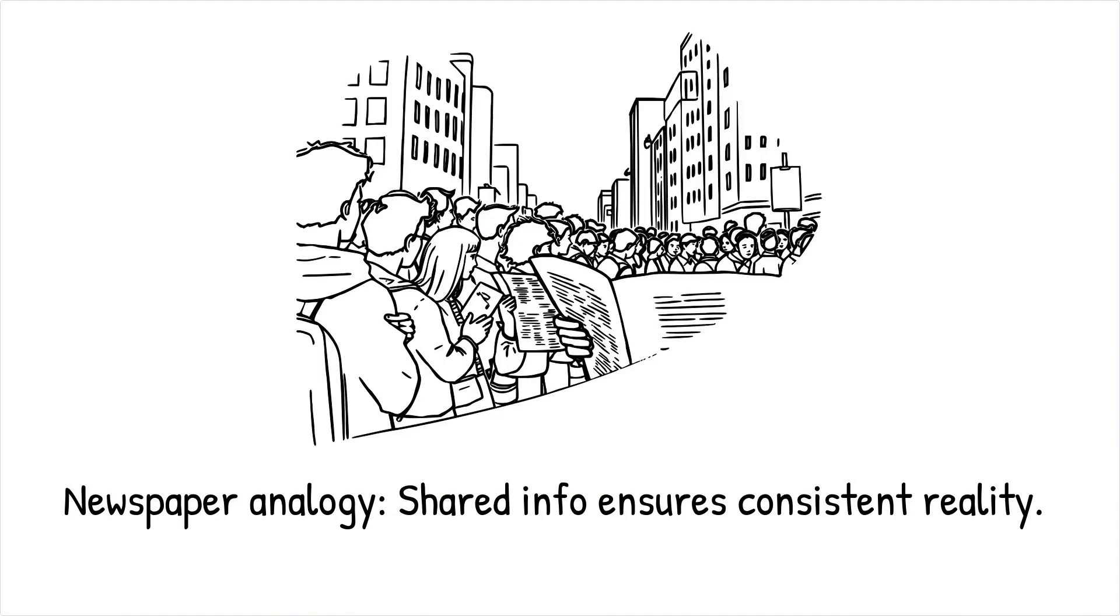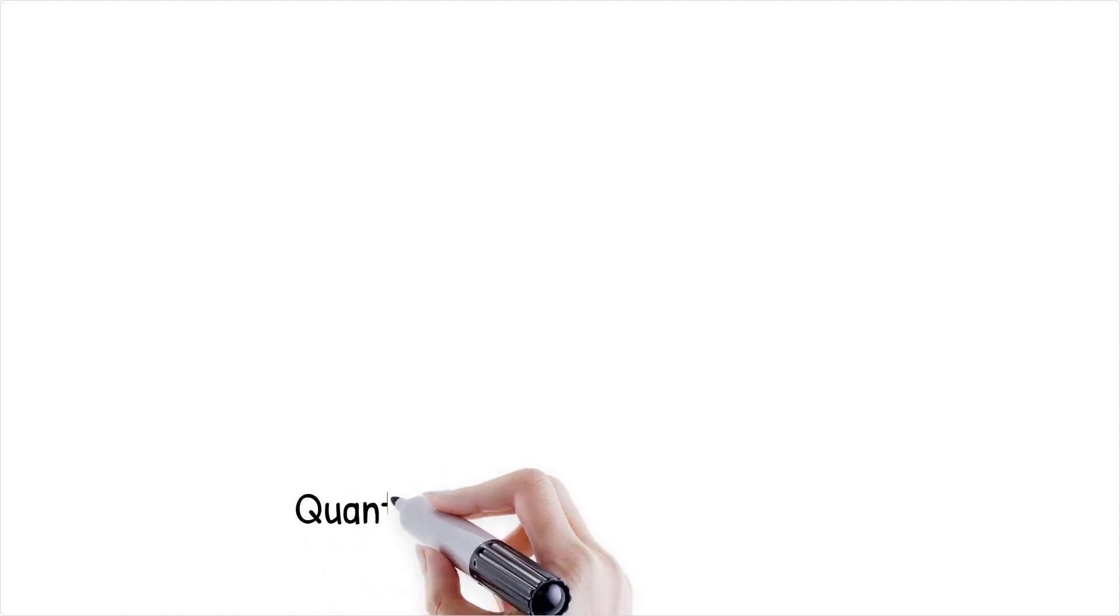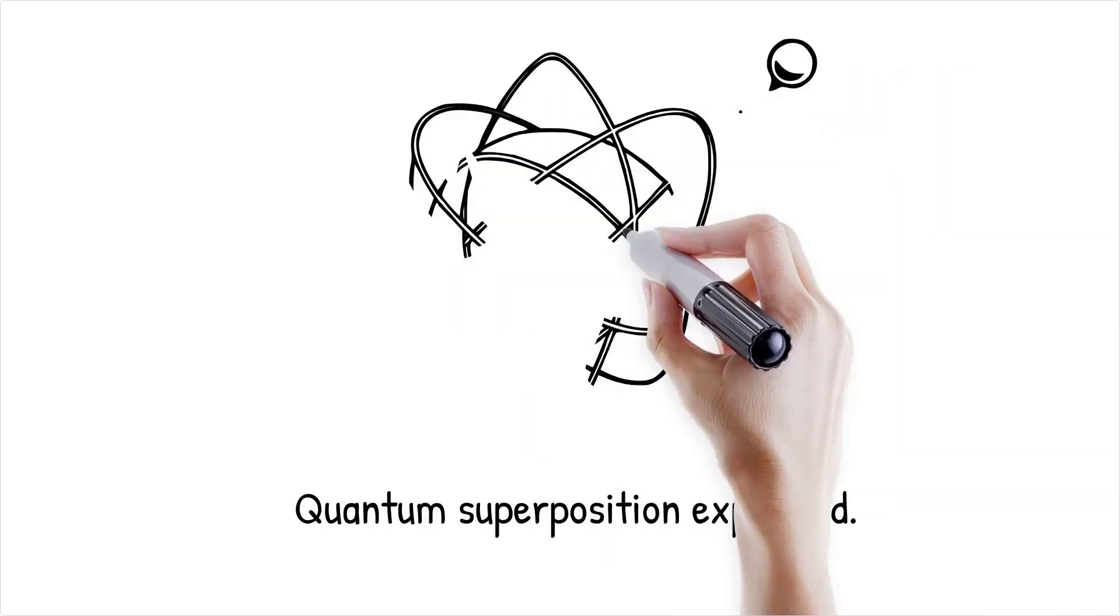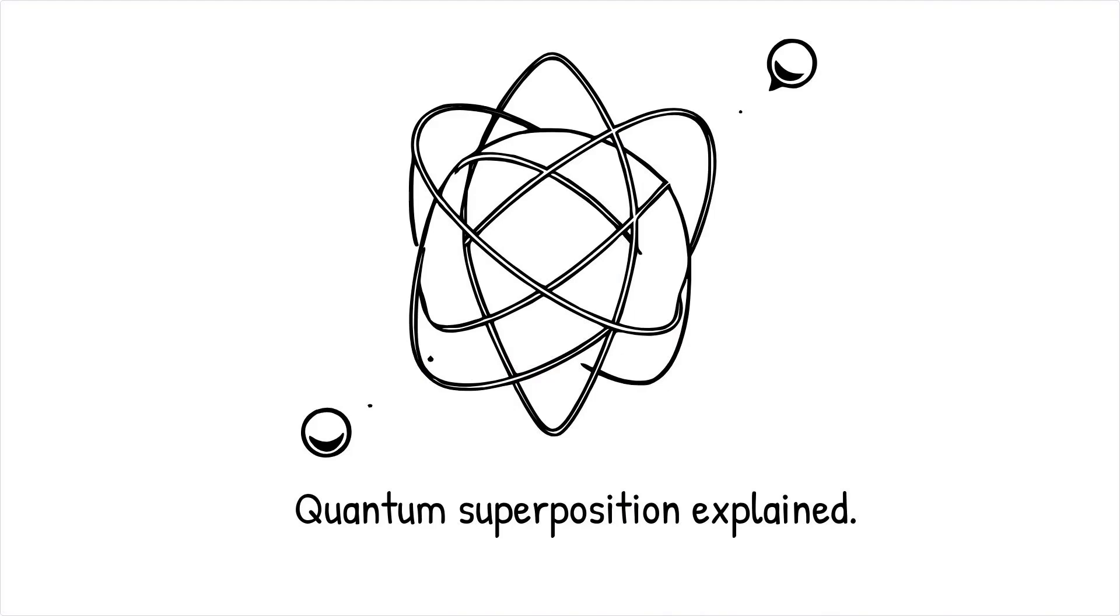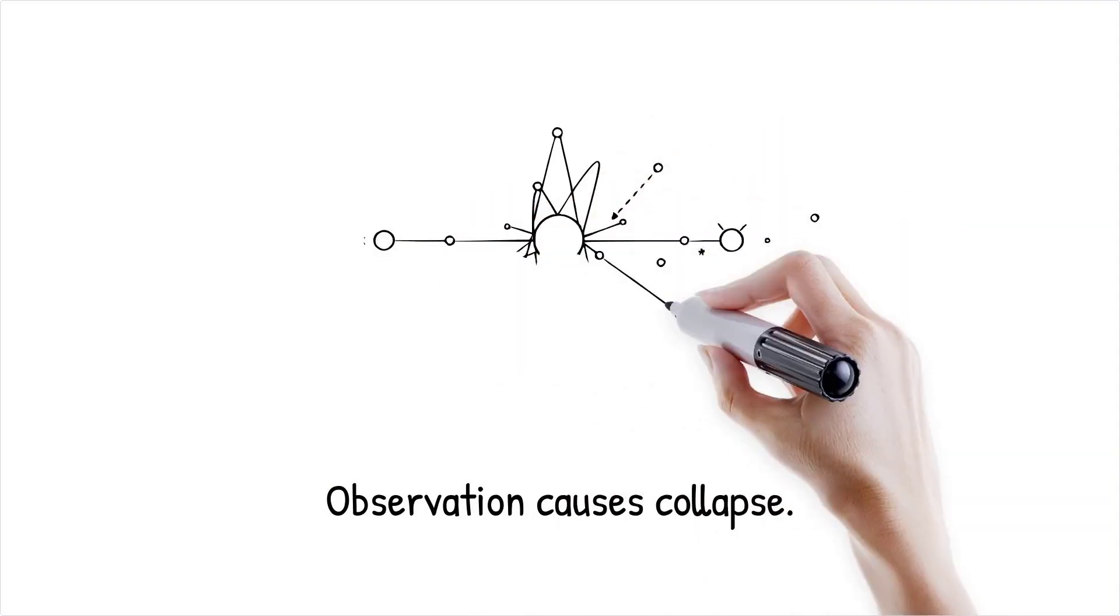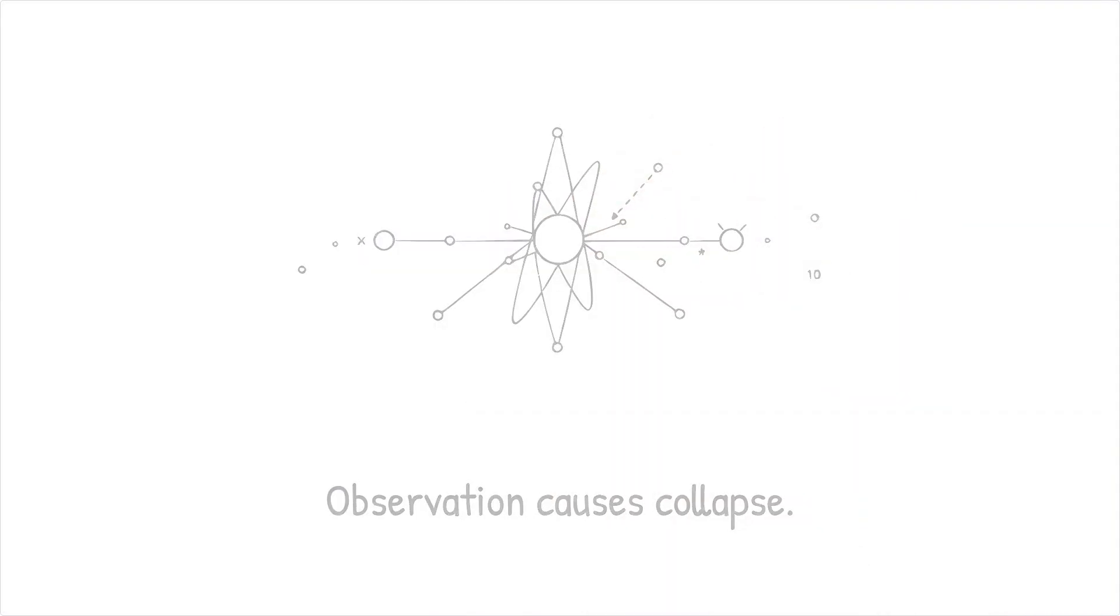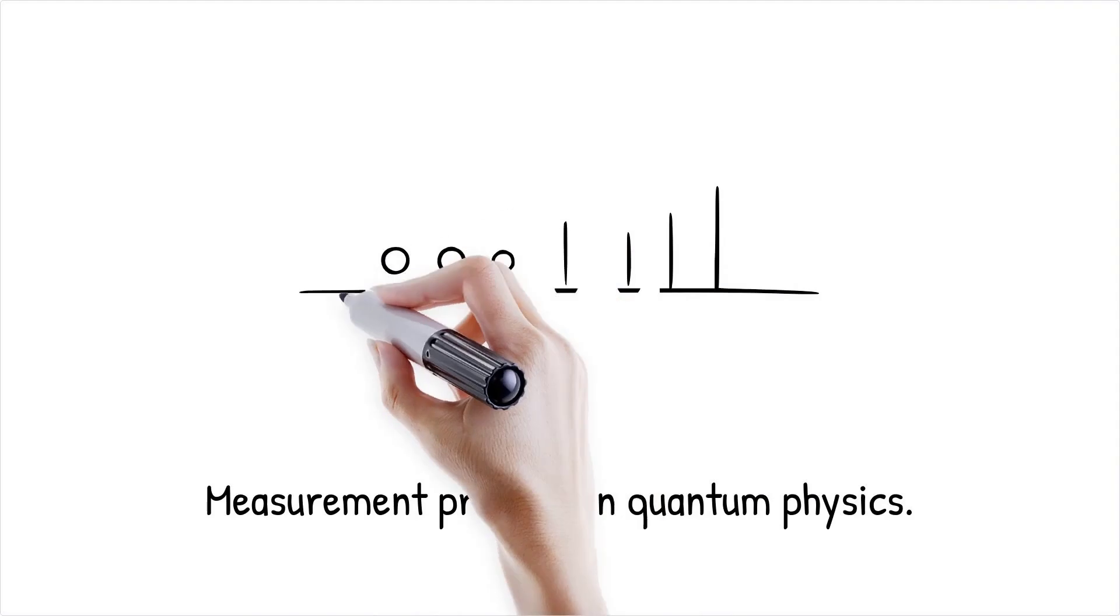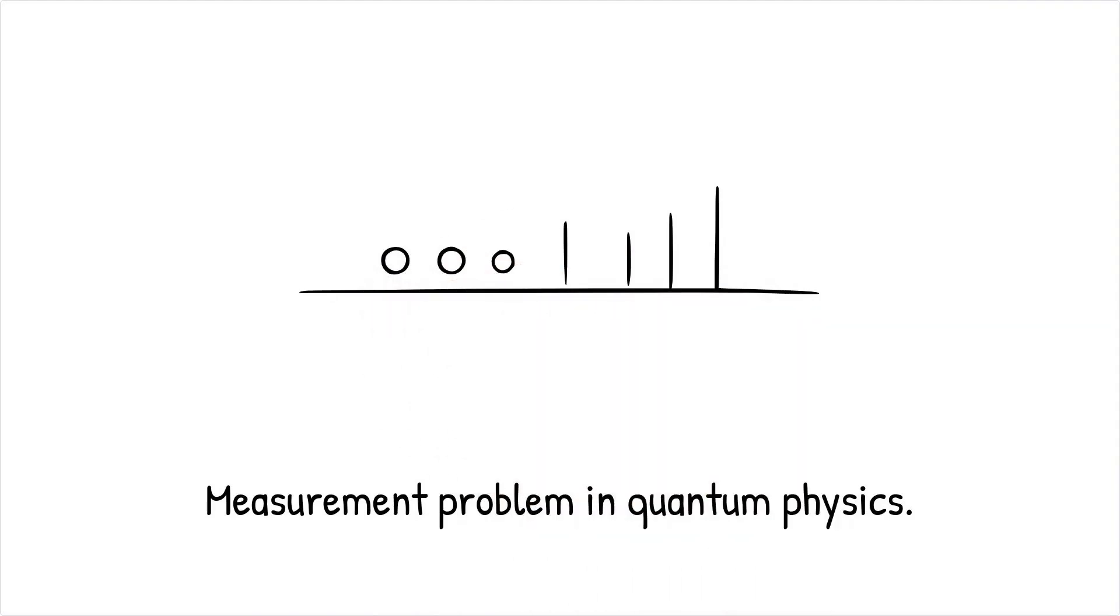In quantum mechanics, a particle can exist in a superposition of multiple states, such as being in two places at once. However, when we observe it, this superposition collapses into a single definite state. The question of what causes this collapse, and why the universe seems to choose one outcome over others, is central to the measurement problem.